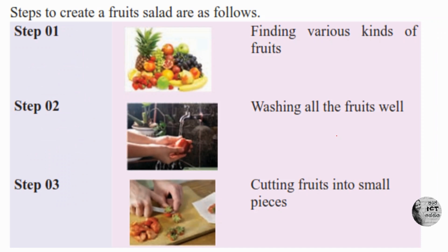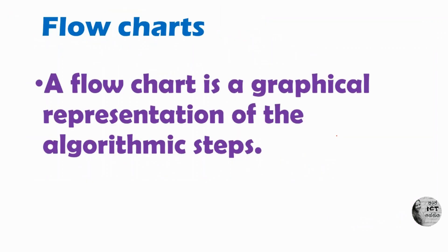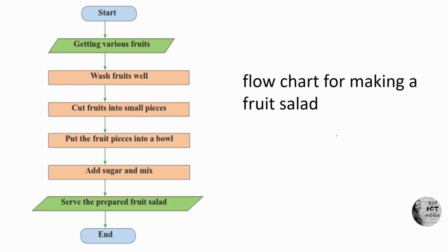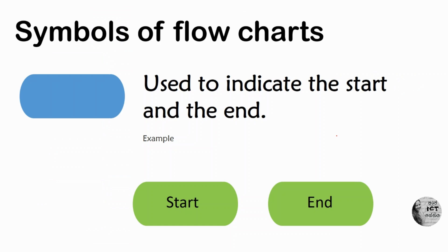Now we are going to convert the algorithm into a flowchart. A flowchart is a graphical representation of algorithmic steps. You will convert your algorithm into a flowchart by using some symbols. I am quickly teaching you because you already know these things — I am just summarizing.